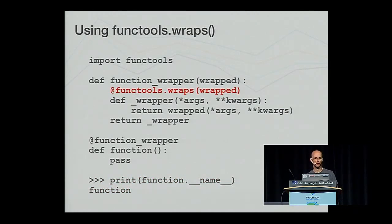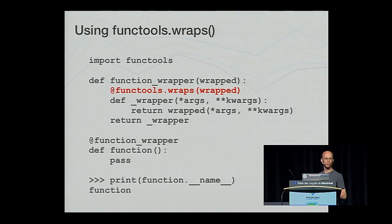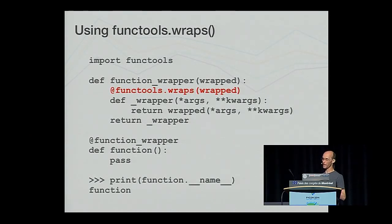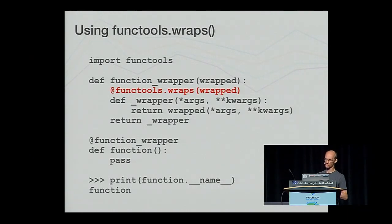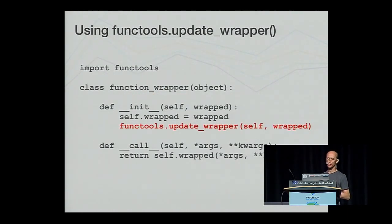Needing to manually copy the attributes is laborious and would need to be updated if any further special attributes were added. For example, we should also copy the __module__ attribute, and in Python 3, the __qualname__ and __annotations__ attributes were added. To aid in getting this right, the Python standard library provides the functools.wraps decorator which does this task for you. If using a class to implement the wrapper, instead of functools.wraps, we would use the functools.update_wrapper function instead.